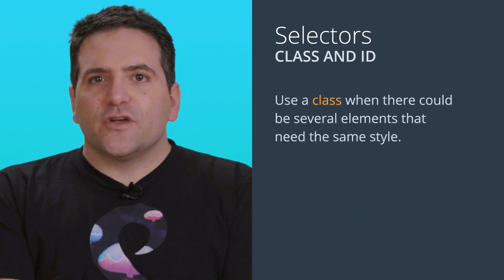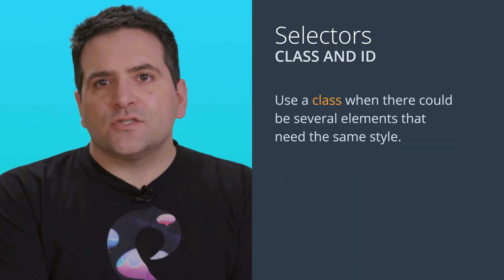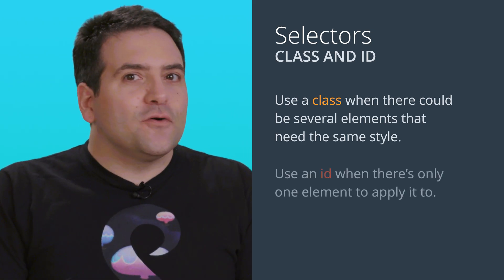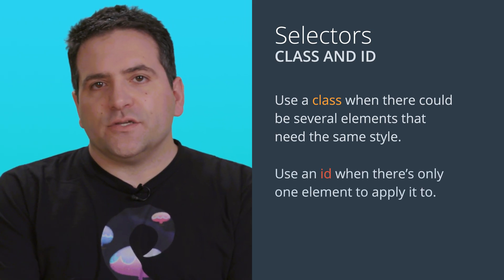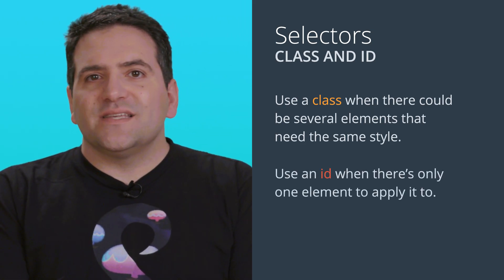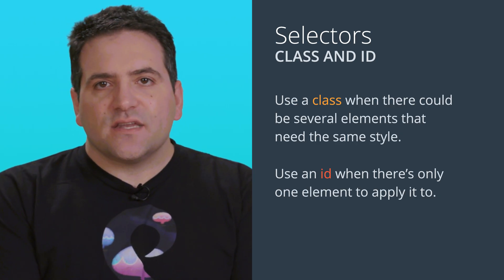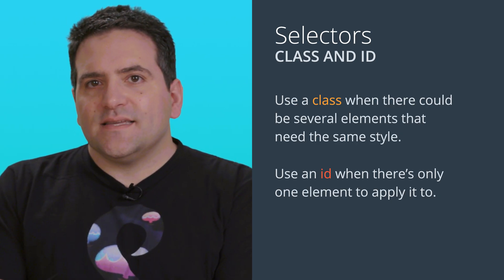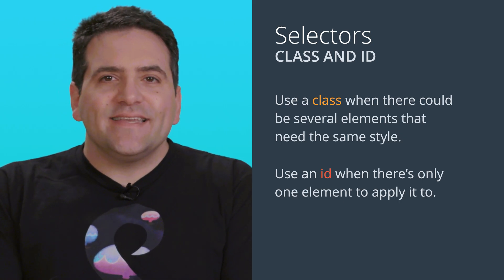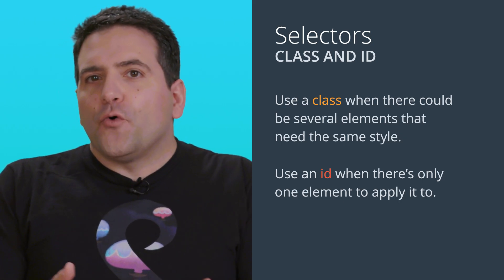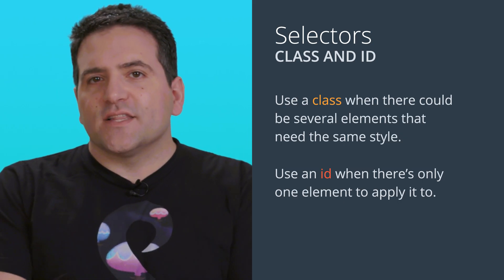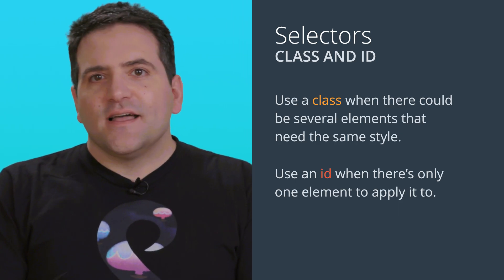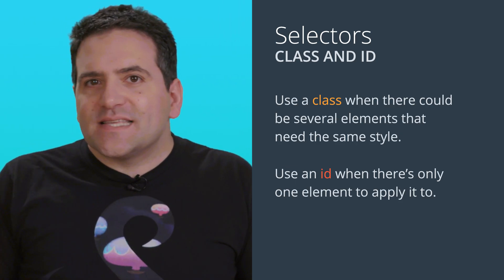Classes are what you should use when there can be several elements on the page that you want to apply a rule to. If you know there will be only one element to apply it to, you can make this clearer by using the ID attribute instead of class. The difference between ID and class is that ID is meant to be unique — there can only be one element with a particular ID on the page. In contrast, there can be any number of elements with the same class.